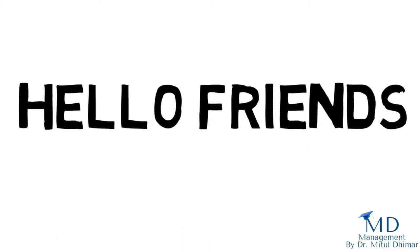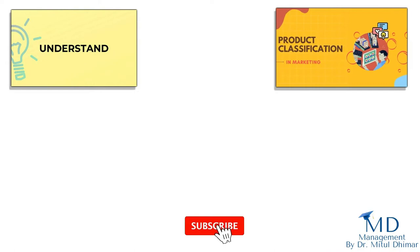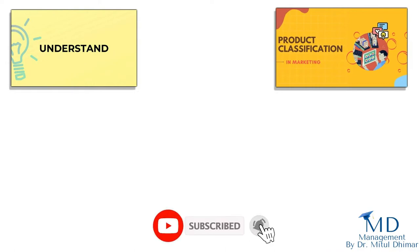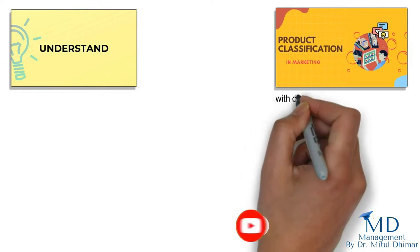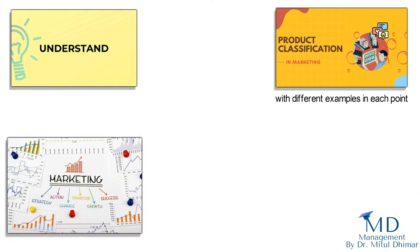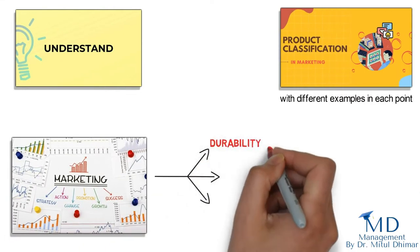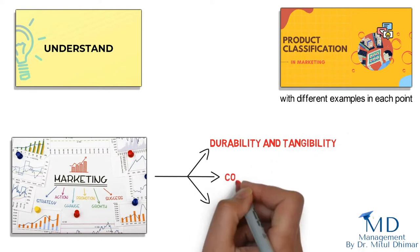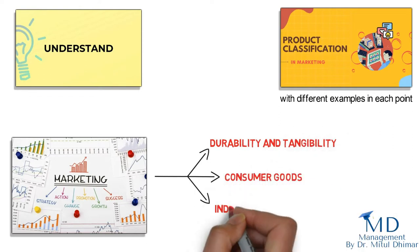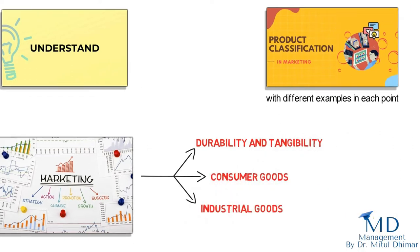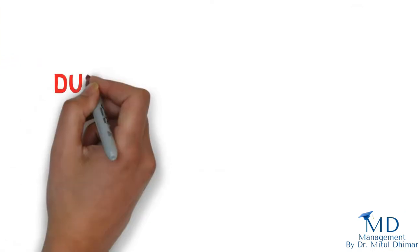Hello friends, today we are going to understand product classification in marketing in detail with different examples in each point. Marketers have traditionally classified products based on durability and tangibility, consumer goods, and industrial goods.